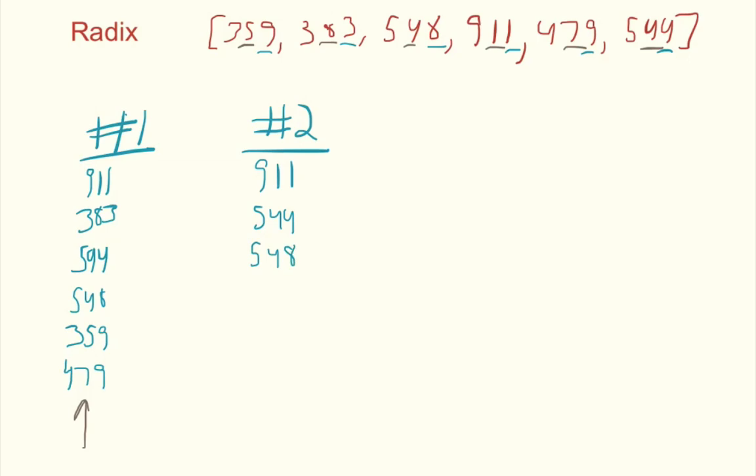and then we have 359 and 479, and finally 383. Okay, now for step three, which is my favorite step in radix because it's pretty cool how it all comes together. We do the last step, so the lowest in the last step is going to be 359,